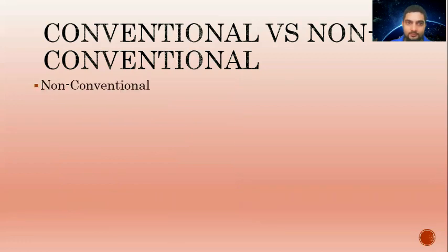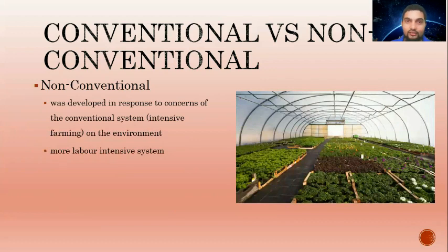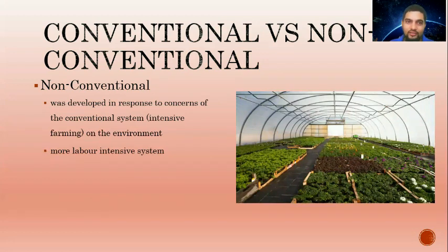Non-conventional farming was developed in response to the concerns of conventional farming. Conventional farming was destroying the environment — you had to clear large areas of land, which led to deforestation. So non-conventional methods were developed. Compared to conventional methods, non-conventional farming is more labor intensive, meaning you have to include more manual labor. For example, in the image on the right, that's an example of a non-conventional farming system where large machines cannot go in to plow the land, so more manual labor is required.